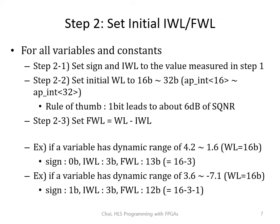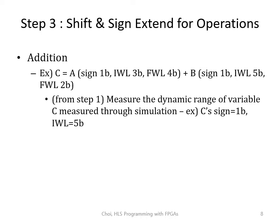After assigning the initial IWL and FWL, you need to shift and sign extend for all operations. Let's explain addition first. Suppose you're adding variables A and B and assigning to variable C. Variable A has one sign bit, IWL of 3 bits, and FWL of 4 bits. Variable B has one sign bit, IWL of 5 bits, and FWL of 2 bits.